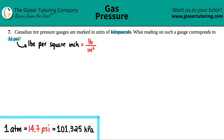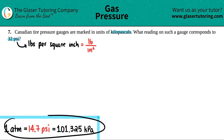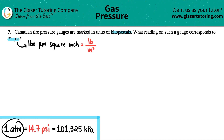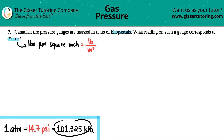Use flash cards — do whatever you have to do to memorize these conversions. One atmosphere (atm) equals 14.7 pounds per square inch (psi), and that equals 101.325 kilopascals. So start with what you're given: 32 psi.